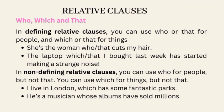In non-defining relative clauses, you can use who for people but not that, and which for things but not that. For example: 'I live in London, which has some fantastic parks' — non-defining clause about a thing. 'He's a musician whose albums have sold millions' — non-defining clause about a person. A simple way to remember this is to think of 'which' as disposable like a sandwich bag — if you can remove the clause without destroying the meaning of the sentence, it is non-essential and you can use which.